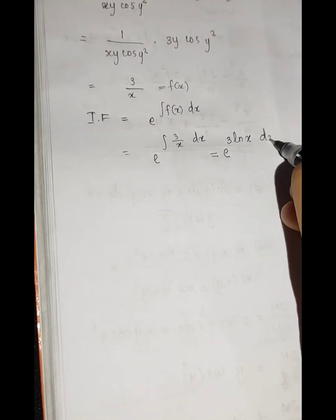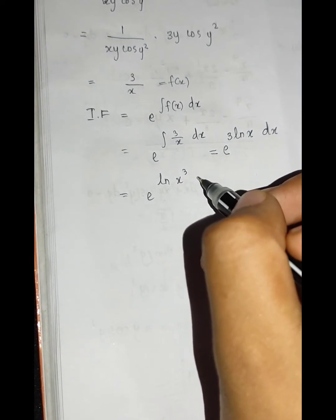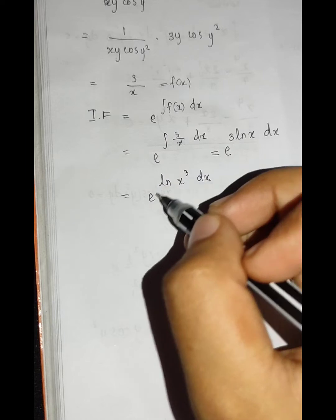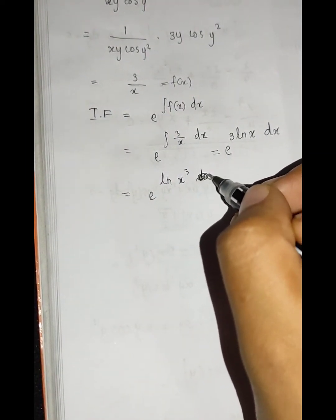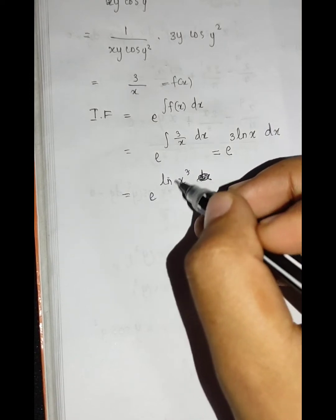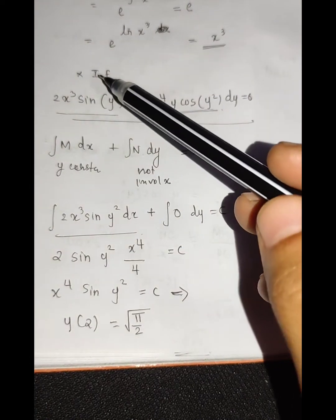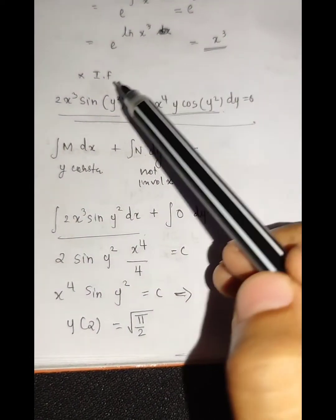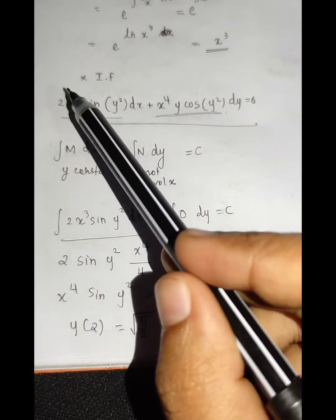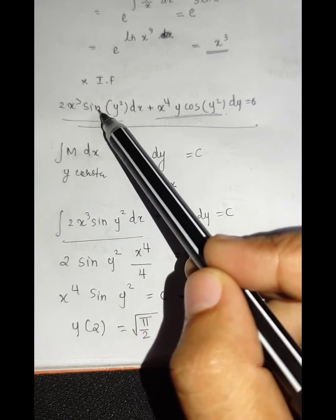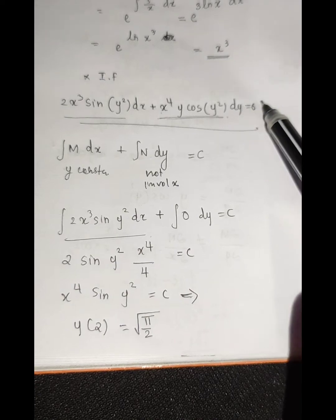We integrate and get e raised to 3 log x. Using the exponential-log cancellation, the integrating factor is x³. We multiply the entire equation throughout by x³.